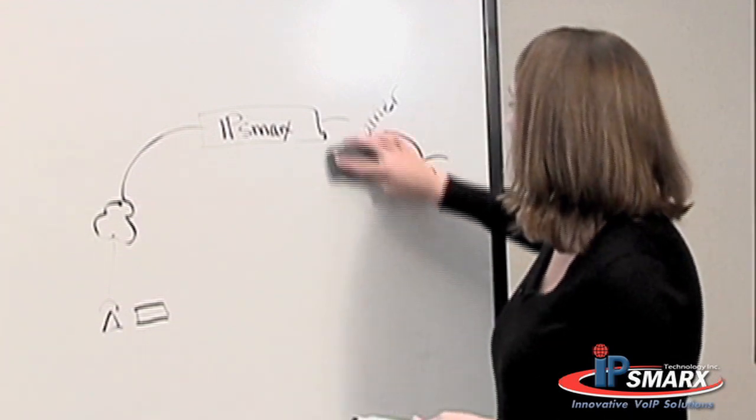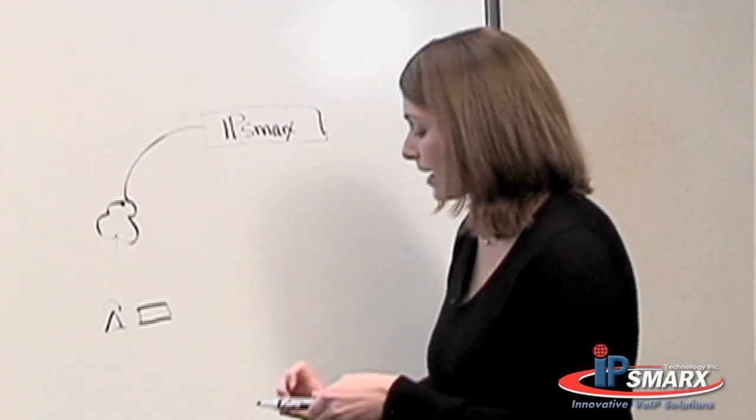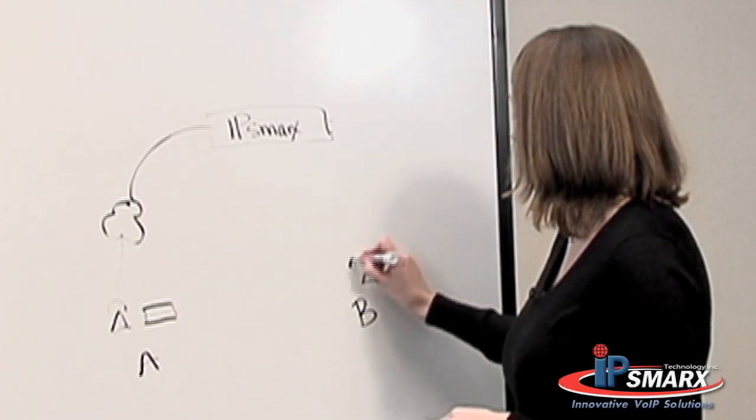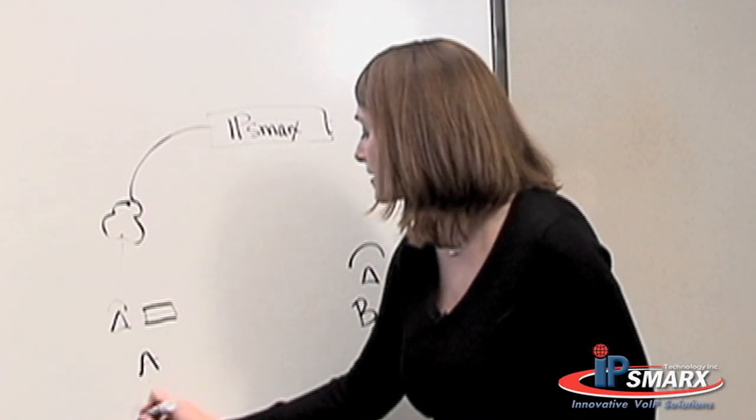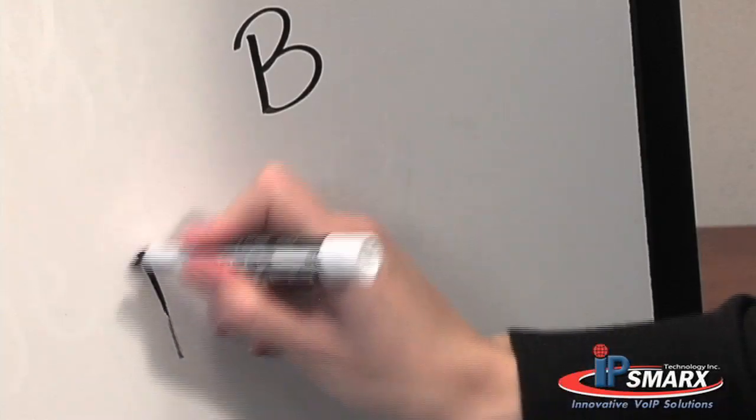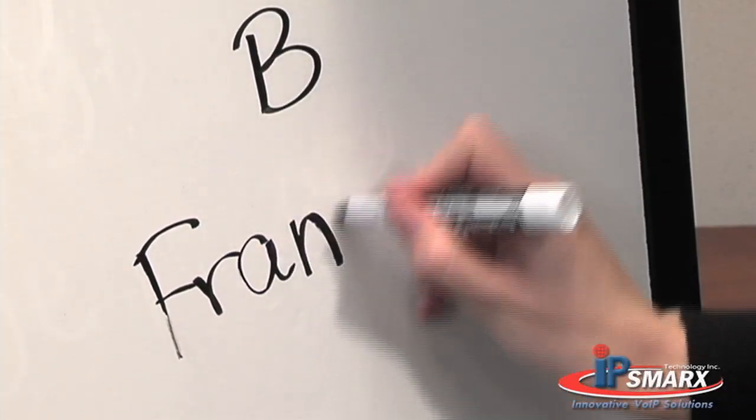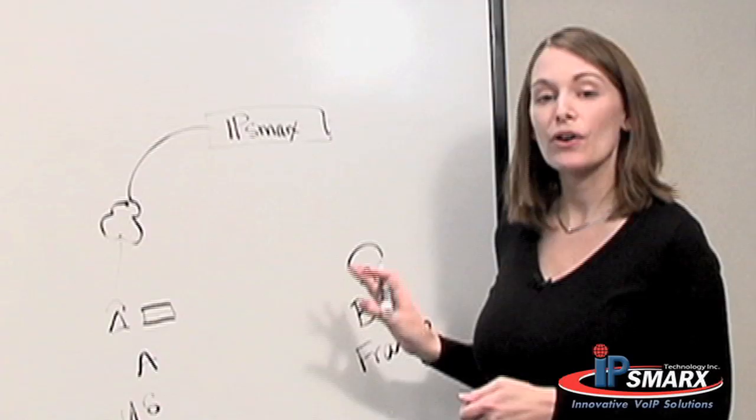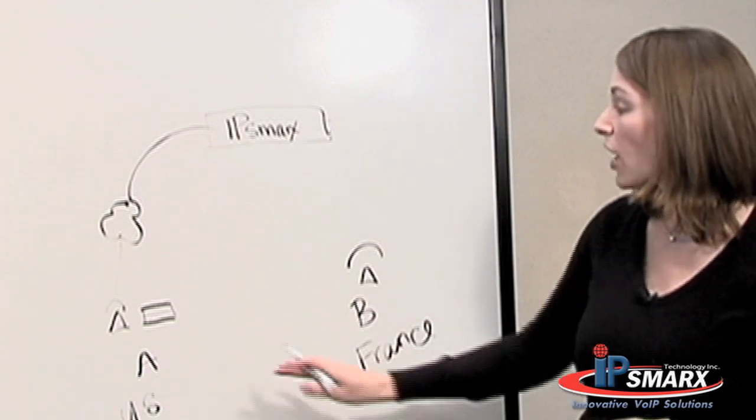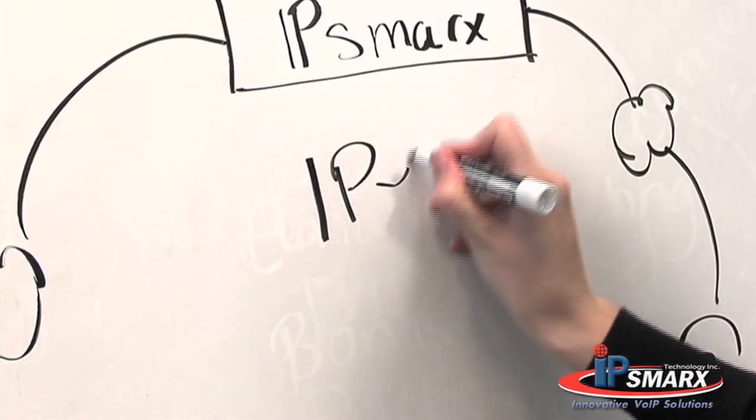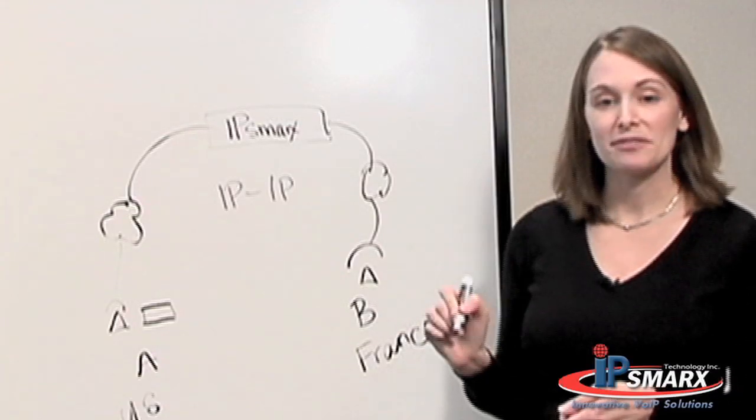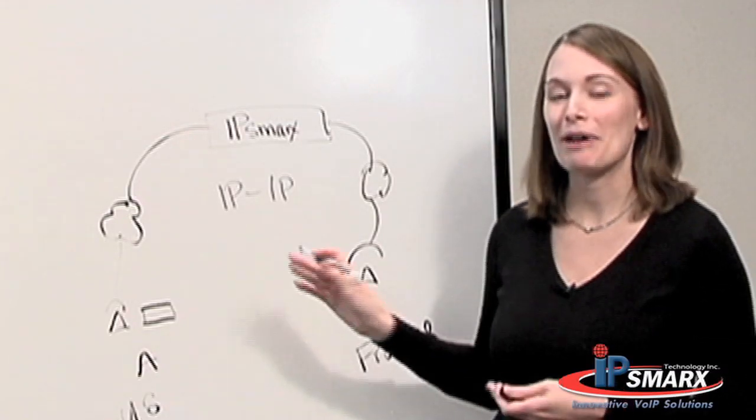So let's say, for example, customer A and customer B are in different countries. Let's say customer A is in the U.S. and customer B is in France, for example. They each have an IP phone configured with your system and they've signed up as one of your customers. They can now talk to each other from IP phone to IP phone over the internet for free. That's called IP to IP.